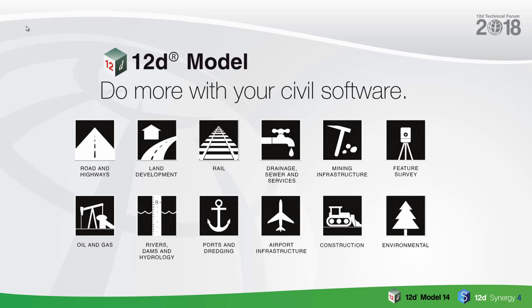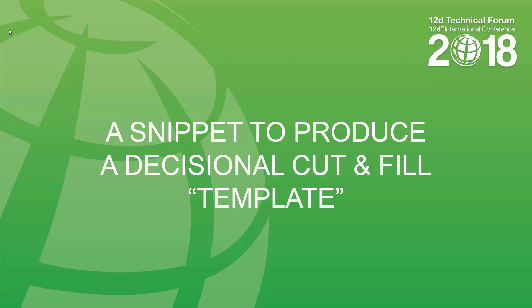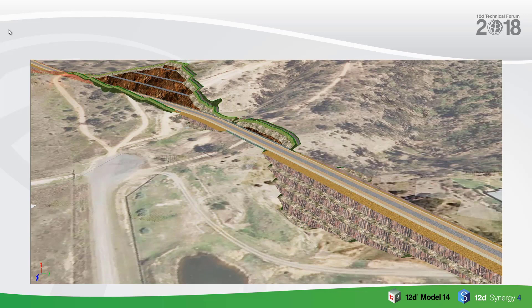That's all I have on the terminology part of this presentation. We're going to move on now to another part. I'd like to move on to a snippet that I've written to produce a decisional cut and fill template that can be used not only for rail — it could also be used for road work — but in this particular case we're going to use it for rail. This snippet will produce the whole rail formation, all of the cut batters, all of the fill batters, and that includes cut-off drains and berms, safety berms, etc., produced by one template on the left and one on the right, with a snippet for cut and fill on each side.